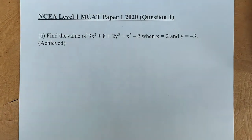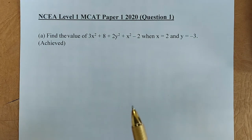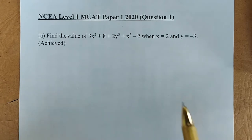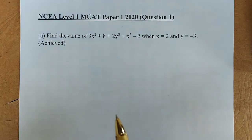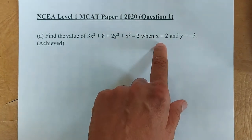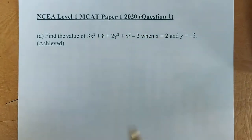Let's tackle question 1. The first question is: find the values of 3x squared plus 8 plus 2y squared plus x squared minus 2, when x equals 2 and y equals minus 3. So in other words, we are going to do substitution — instead of x we are going to replace it with 2, and instead of y we are going to replace it with minus 3.